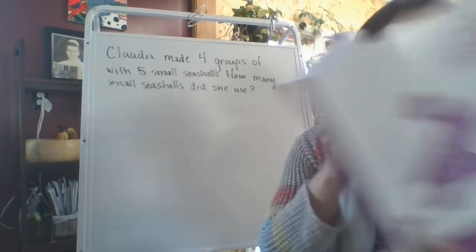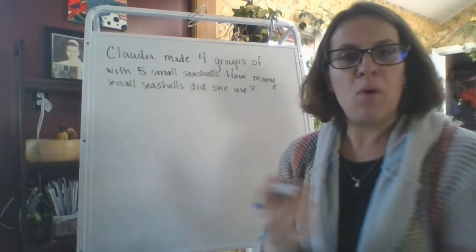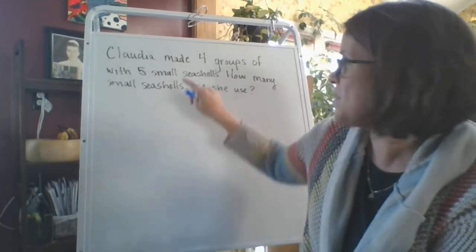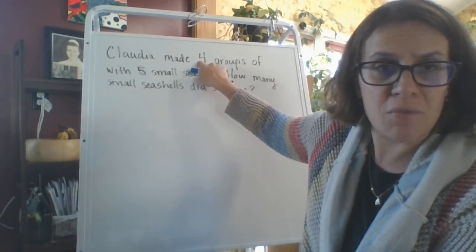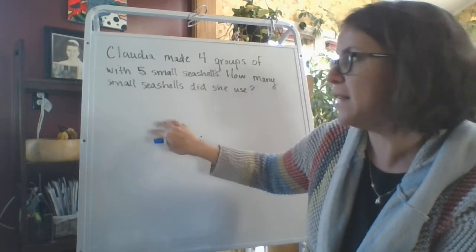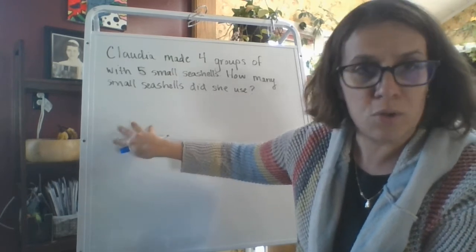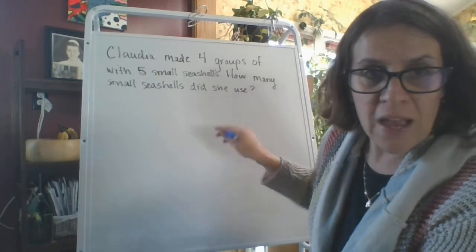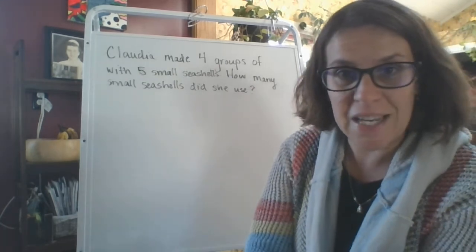And what I really wanted to just kind of go over again with you, and we did briefly talk about this about doubling our groups, is if you know your products of four, if you double your fours, you know your multiplication facts for eight. That goes with three if you know your threes. You can double your threes to know your factors of six, right?